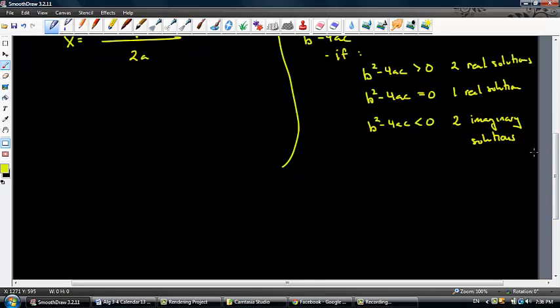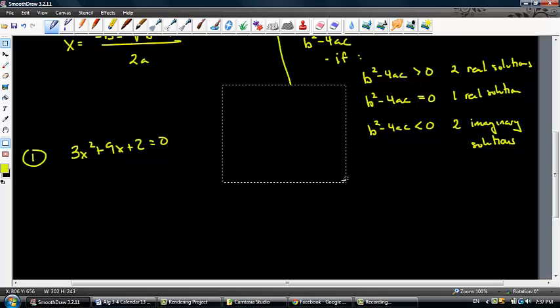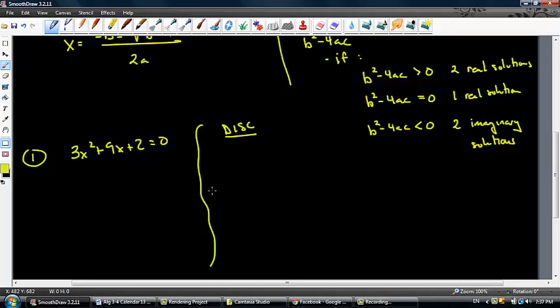So I think the best thing we can do now is give you guys a few examples. Number 1. In your book and on the quiz, you will be asked to find the discriminant, and then solve using the quadratic formula. In a problem like number 1 here, if I have 3x squared plus 9x plus 2 equals 0, I want you to make a little side note for some side work. I'm going to create a little column called disc for the discriminant. I need to identify what a, b, and c are. a is 3, b is 9, c is 2.